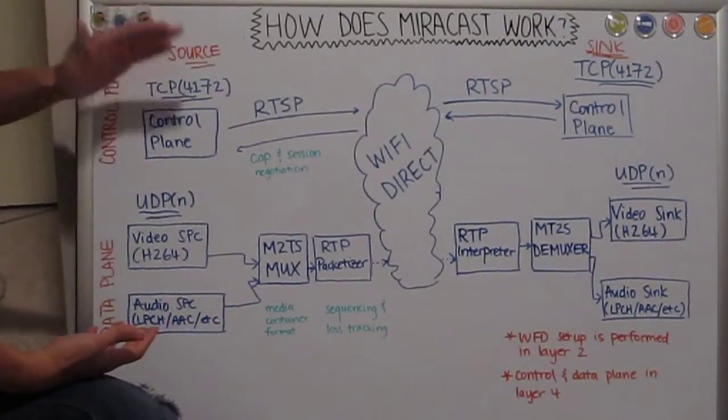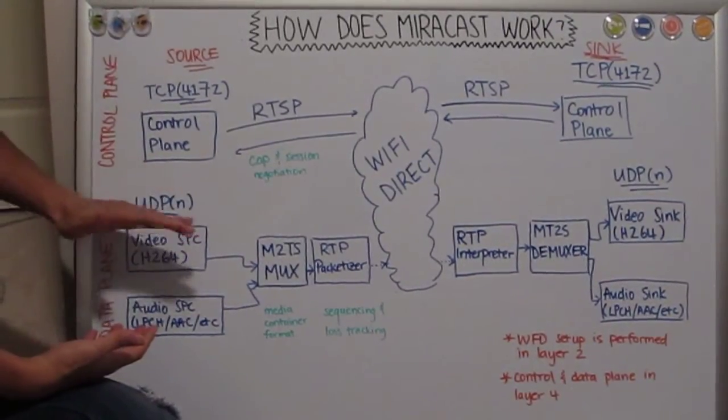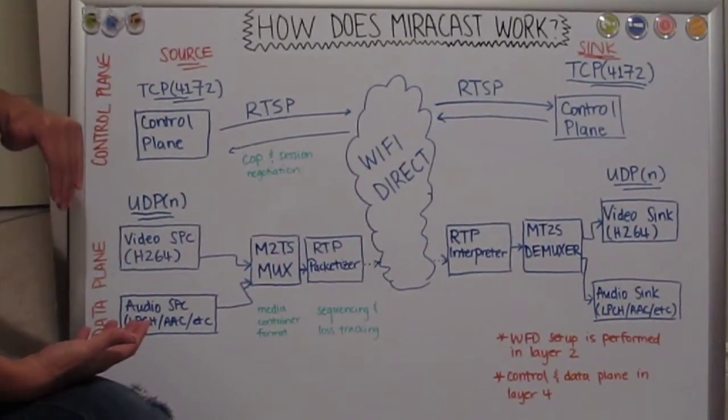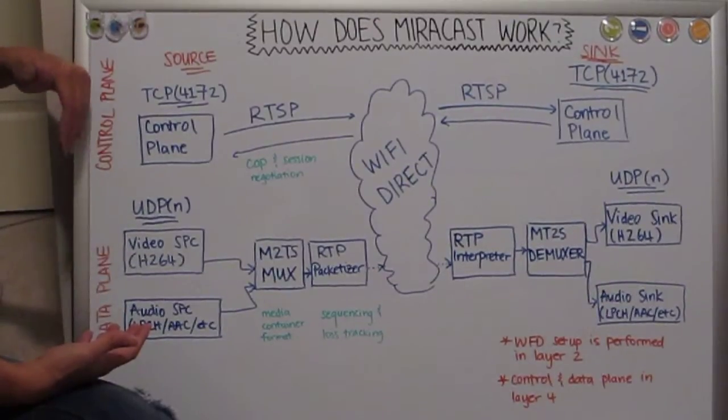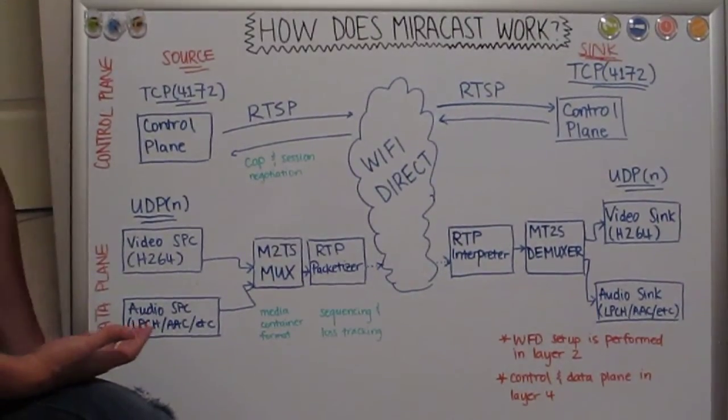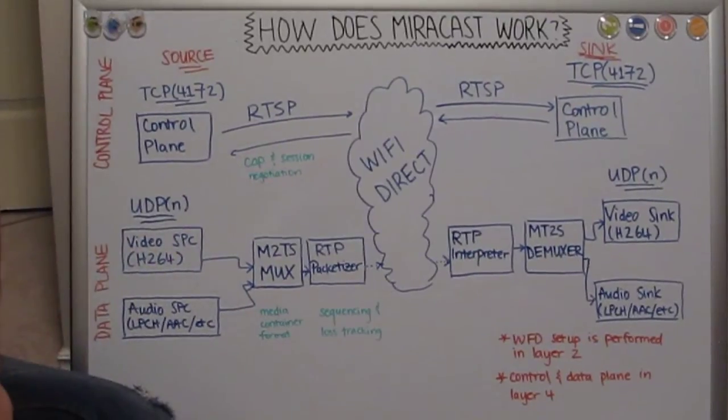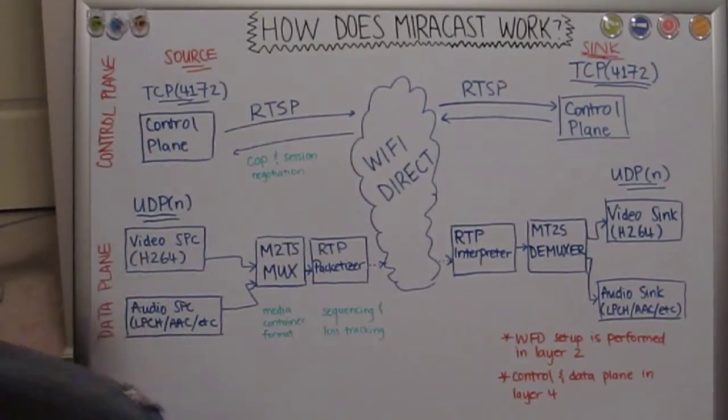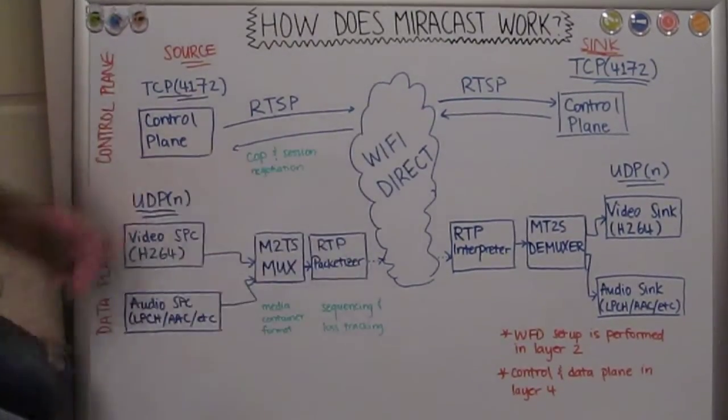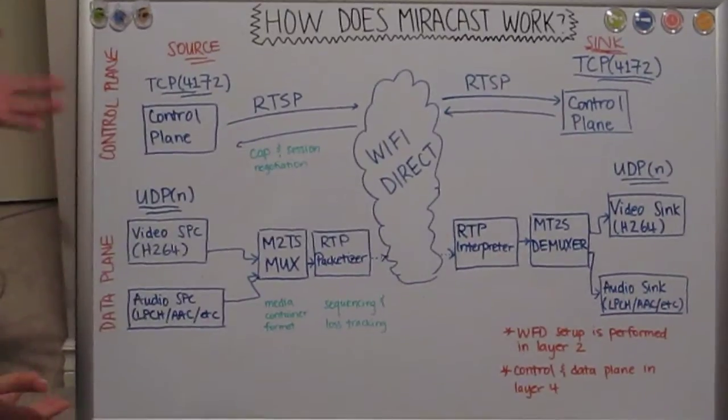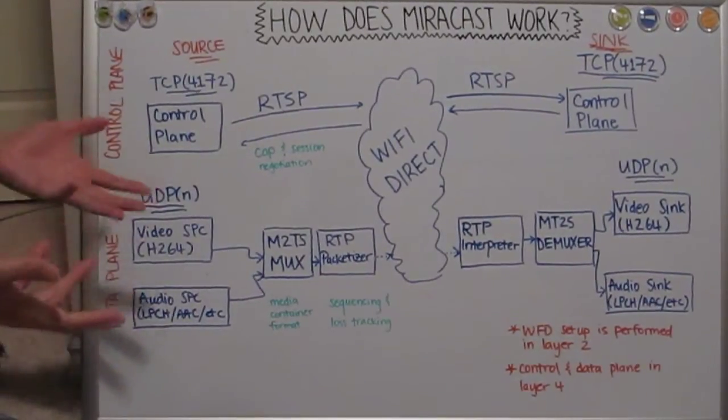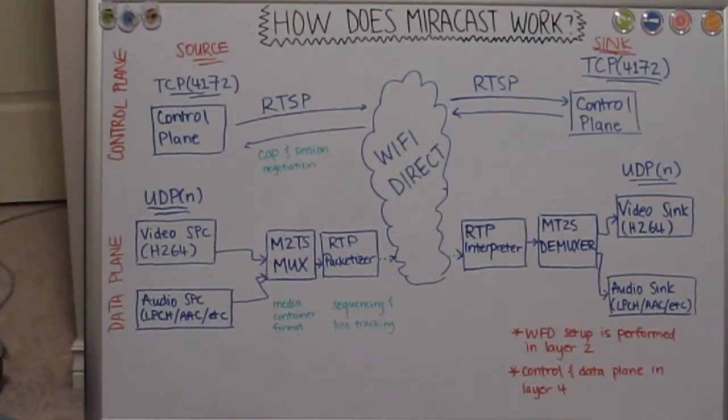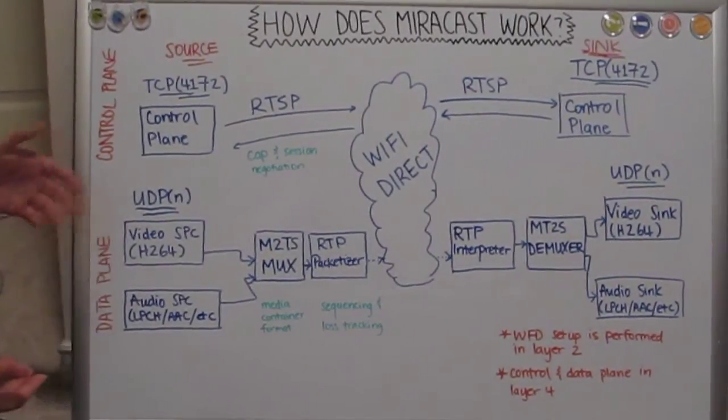So after the control channel and then the session is negotiated, then data start to flow in the data path. And so again, the data path would flow in the UDP port as specified in the control plane. So let's take a closer look at the data plane portion of it. So if you understand how Miracast works, a Miracast stream is essentially just video and audio muxed and then packetized and sent across the network.